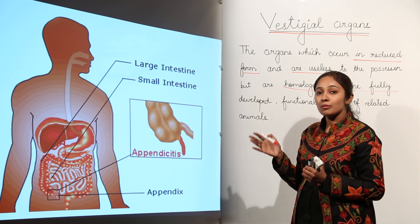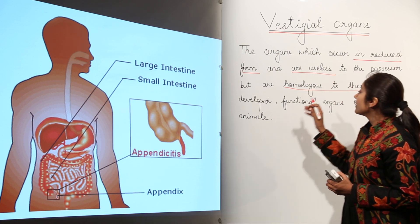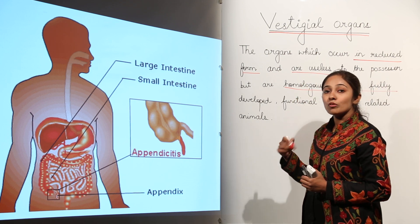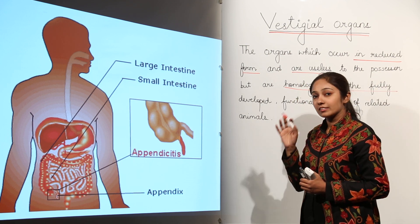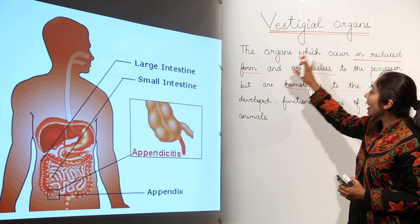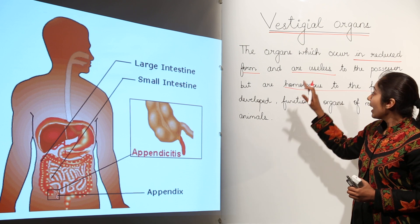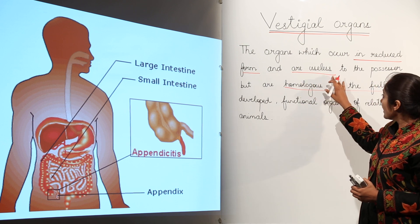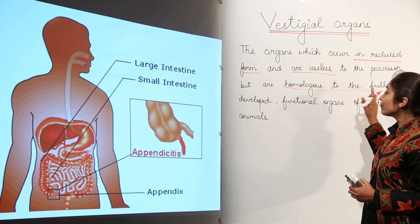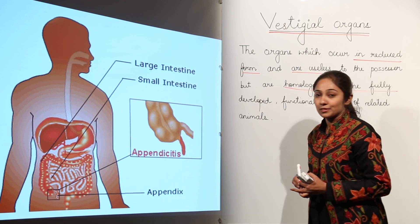If you talk about related species or related organisms, they show some homologous behavior. Vestigial organs occur in reduced form and are useless to the possessor, but are homologous to the fully developed functional organs of related animals.